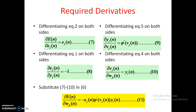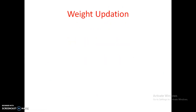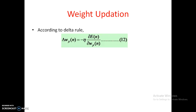Substituting equations 7 through 10 into the chain rule expression gives: ∂E(n)/∂wji(n) = −ej(n) · φ′(vj(n)) · yi(n). The weight update according to the delta rule is: Δwji(n) = −η · ∂E(n)/∂wji(n), where η is the learning rate parameter.